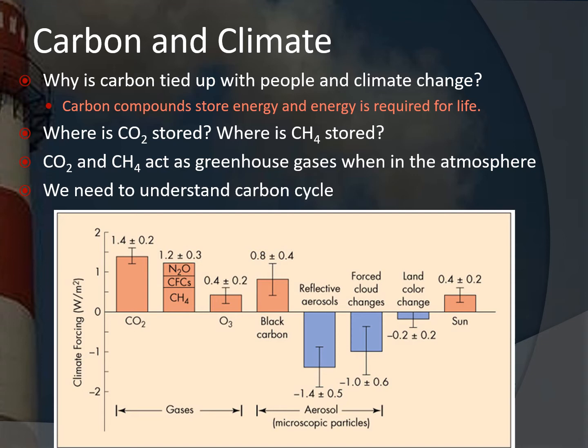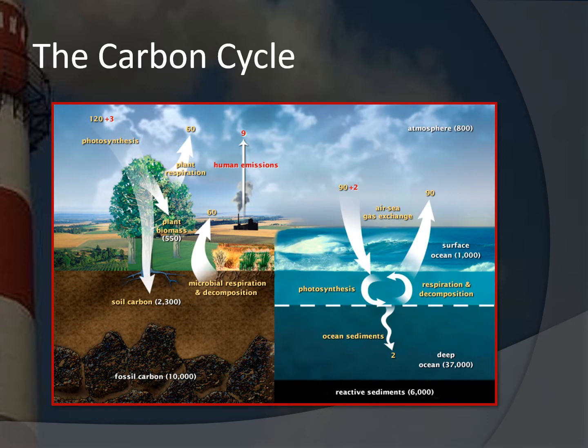What's interesting is that if we suddenly stopped emitting particulate matter that seeds clouds, but other gases in the atmosphere remained, that could be quite bad in the short term. Land color changes also matter: a lighter land surface reflects more solar energy, while a darker surface absorbs more. Now let's get back to the carbon cycle and discuss how much carbon is stored in different carbon sinks and how much is transferred between them on a yearly basis.